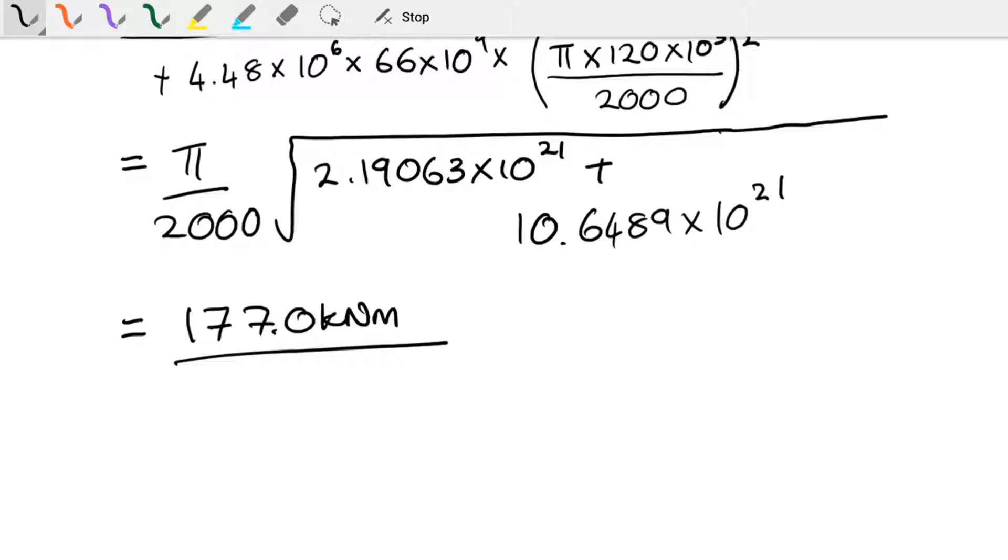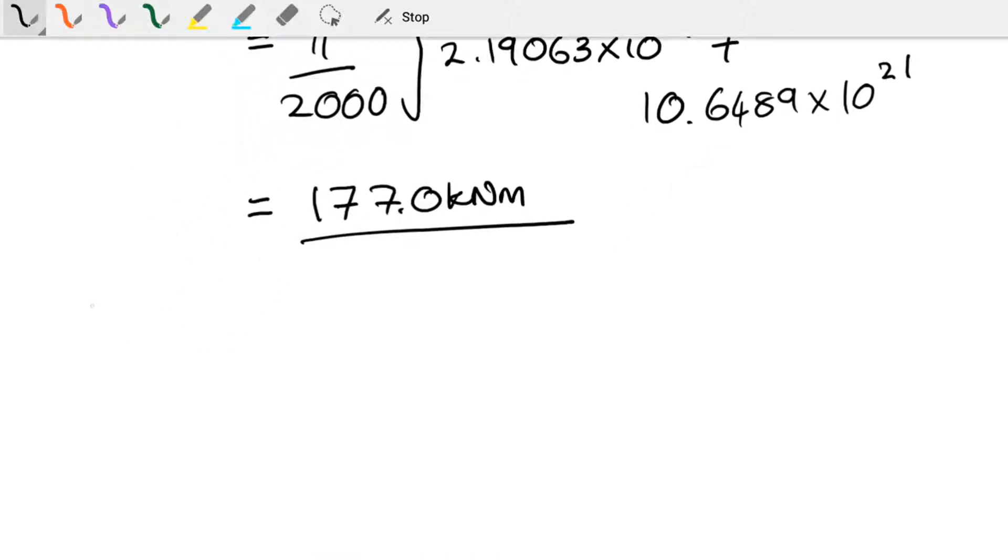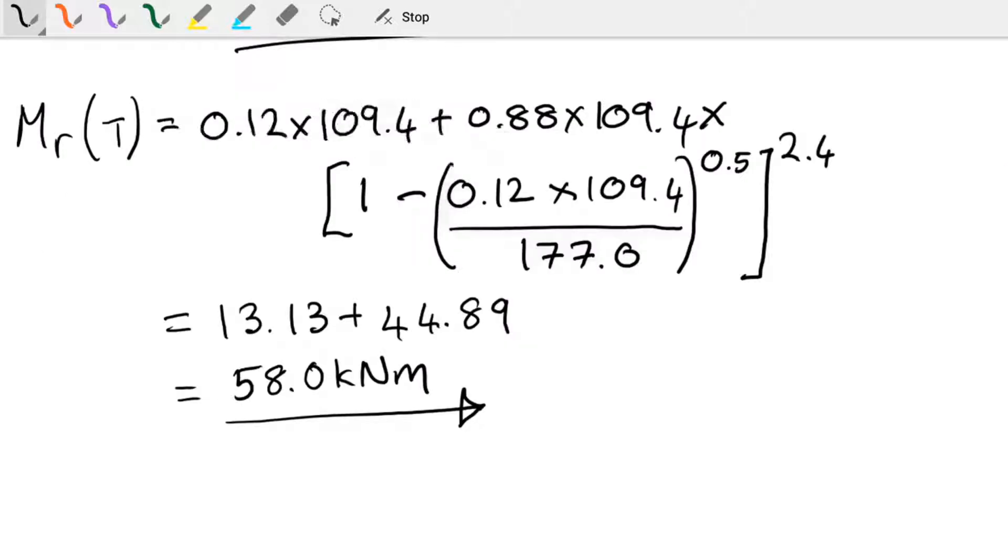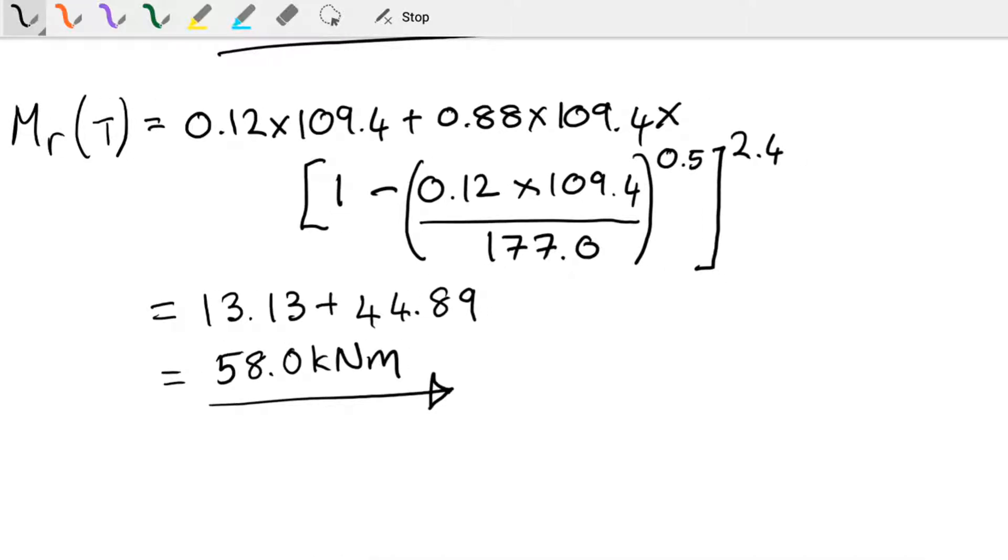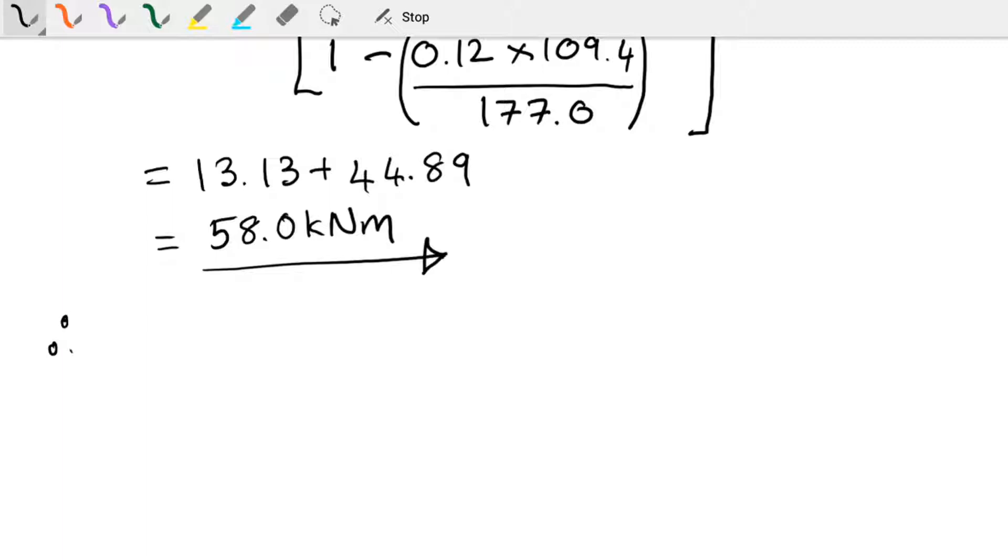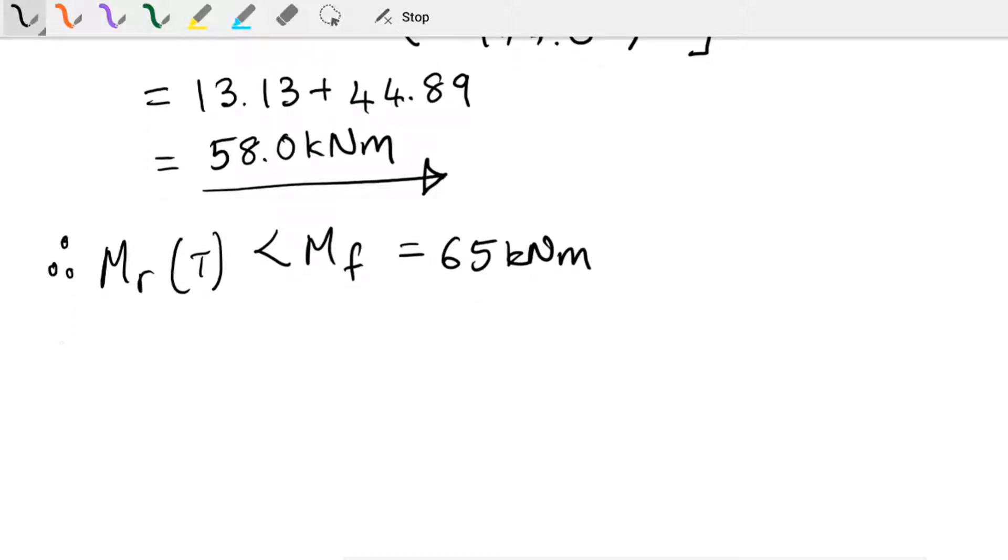We now have everything we need to calculate the resistance of our section. We are looking for our Mr moment of resistance at some temperature T, and this is given by all those values we've calculated above plugged into our equation. Here is the moment of resistance equation that's been filled in with all the values. Plug those all through and eventually you'll find we get to a moment of resistance of 58 kilonewton meters. At this stage now we need to compare our moment of resistance against the actual moment in the beam, and what we find is that it is less than the fire limit state moment which we calculated above of 65 kilonewtons. Therefore this actually fails.